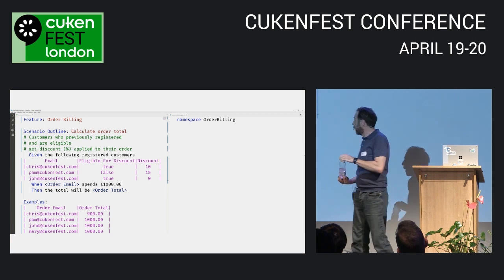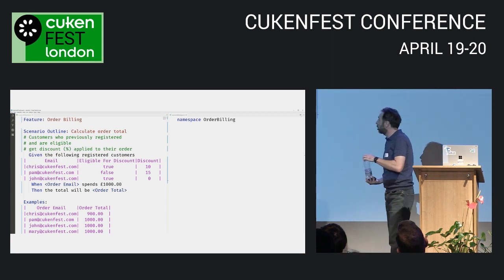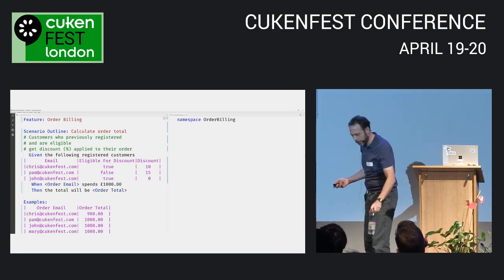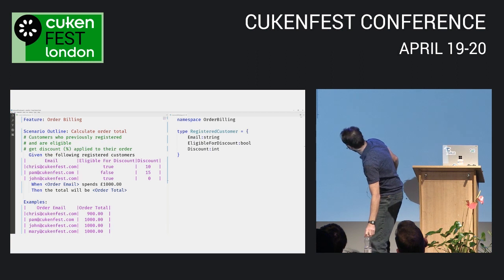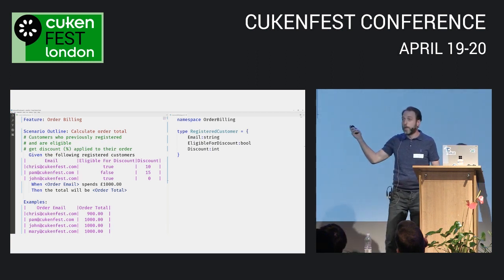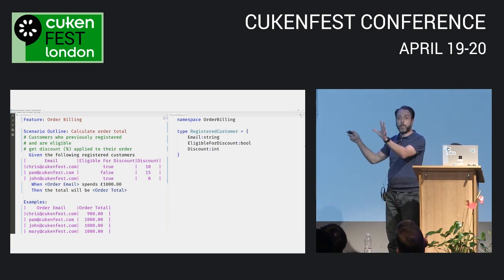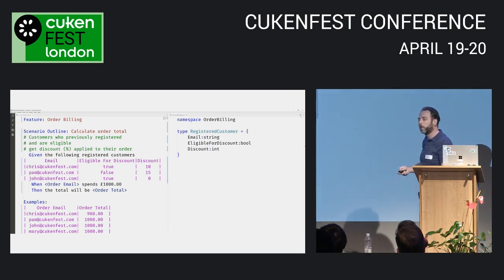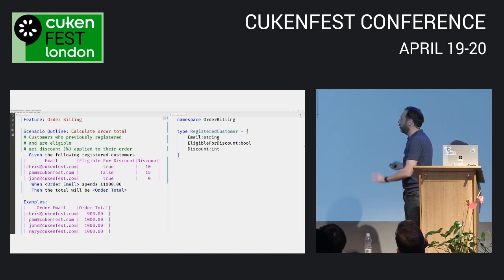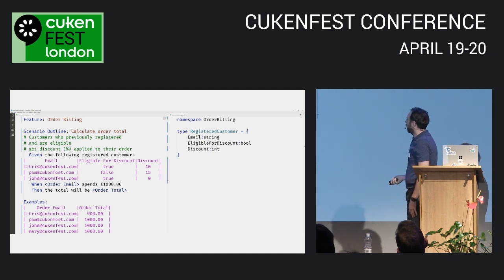The very first step in the scenario is a 'Given', which is just describing a data structure. Data structures are fairly easy to model — this is what's called a record type, just a key-value pair. It looks a little bit like an object in JavaScript.